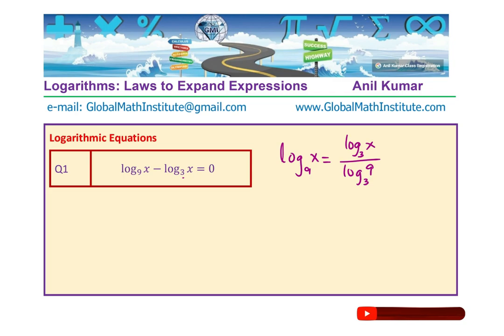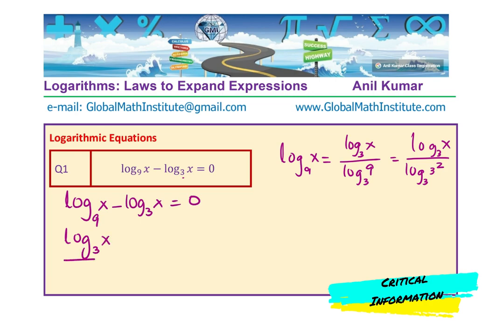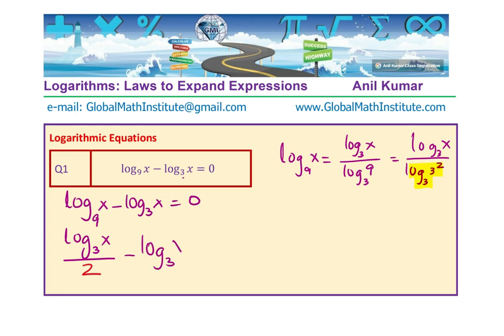Now what is the denominator? Since 9 can be written as 3 squared, we have log base 3 of x over log base 3 of 3 squared. Log base 3 of 3 squared equals 2, so the denominator is 2. Getting back to the equation: log base 3 of x over 2, minus log base 3 of x, equals 0.